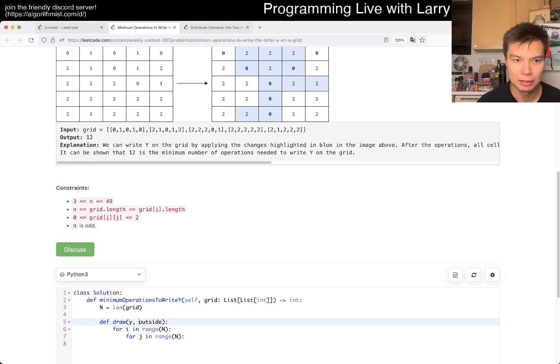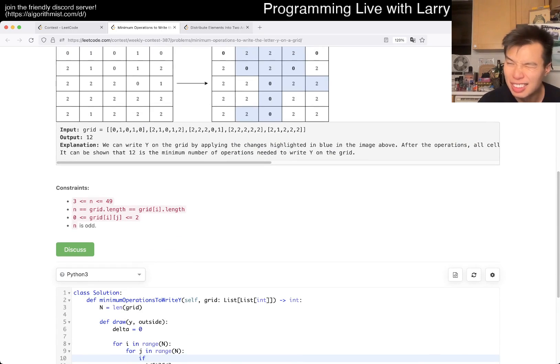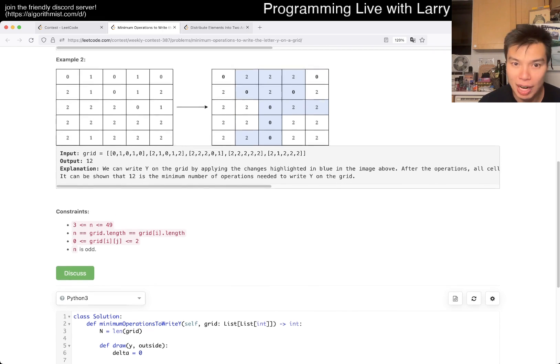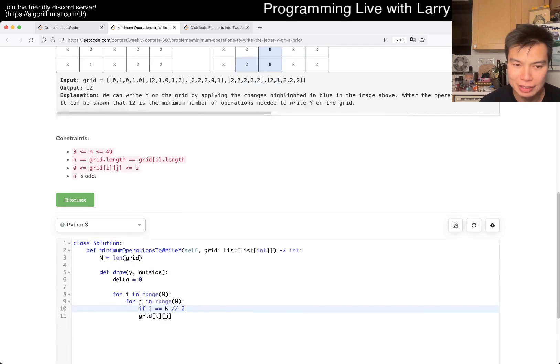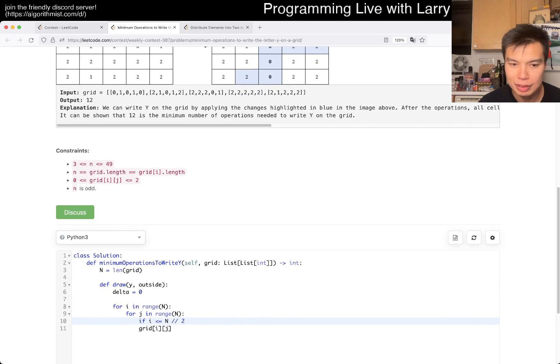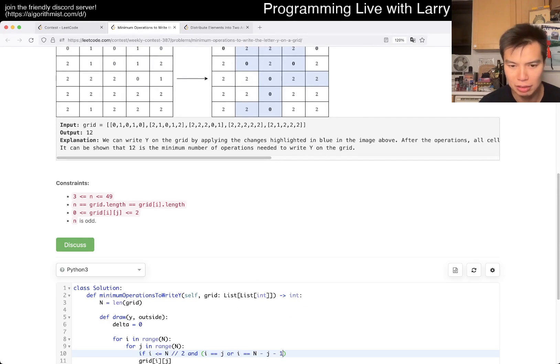So, if grid of I, J, how do I write this, right? So if this is in the... If I do I or is equal to N over 2, right? So if it's 5, it's going to be 2, so this is good. It's less than or equal to. Then, I equals J, or I equals N minus J minus 1, right? Then, if grid is not equal to Y, then delta plus 1.